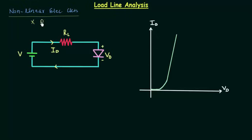The load line of a diode represents the constraints that the other part of the circuit places on the diode. By using the load line, we can see how the other parts of the circuit place constraints on the diode.